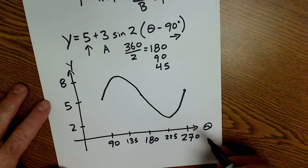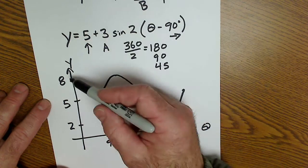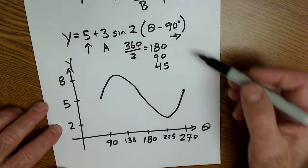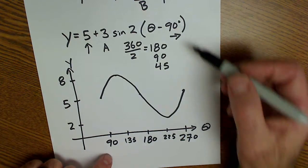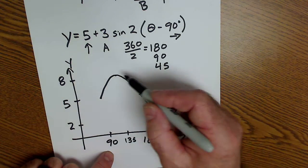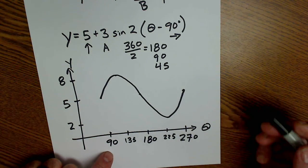So again, 5 simple steps. Mark up the equation. Use these two values to label your y-axis. Step 3, use these two values to label your theta axis. Step 4, put in critical points and connect dots. Step 5, pick a value and check. That's how you graph trig functions.